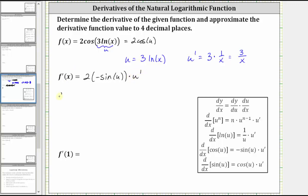Which means f prime of x is equal to negative two sine of three natural log x times three divided by x.